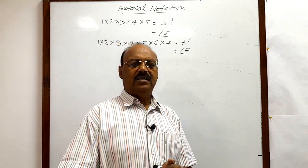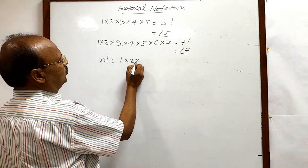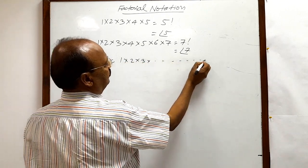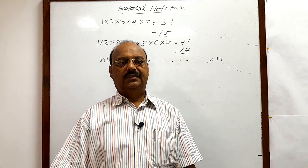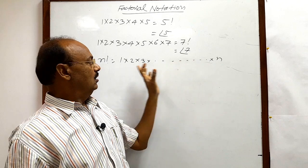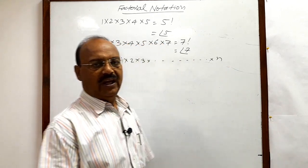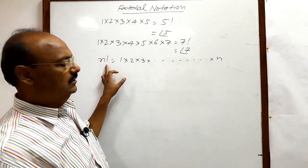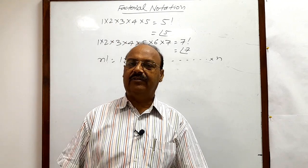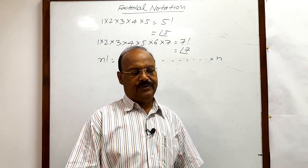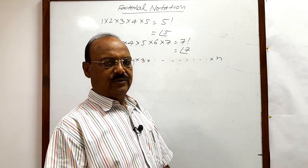So similarly, if the natural number is n, then n factorial can be written as 1 × 2 × 3 × ... × n. The continued product of the first n natural numbers is known as n factorial and written using the notation n!. Factorial notation is very interesting and simple to understand, and we can also simplify factorial expressions.